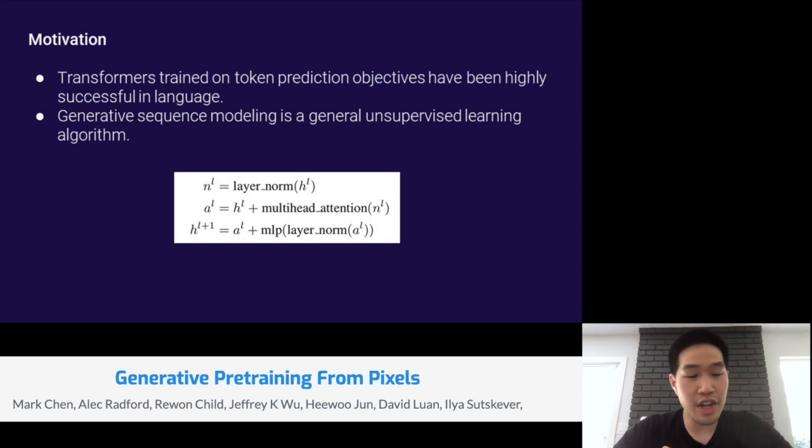Nevertheless, because of the incredible success of unsupervised transformer models on language recently, such as BERT, GPT-2, Roberta, T5, and many others, we believe that this method is due for revisiting in images.